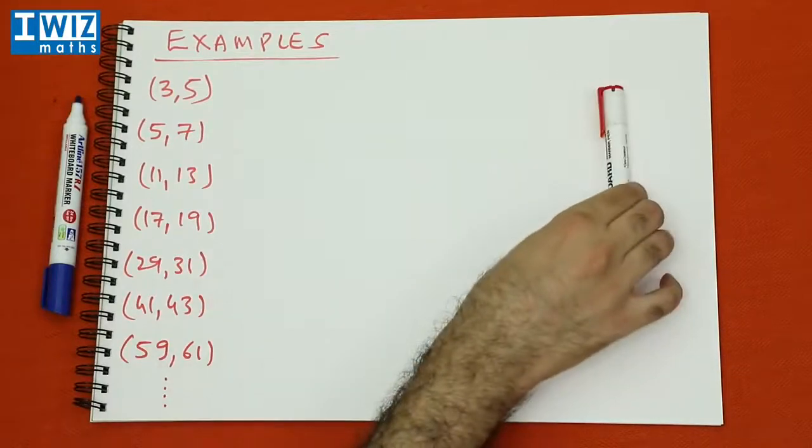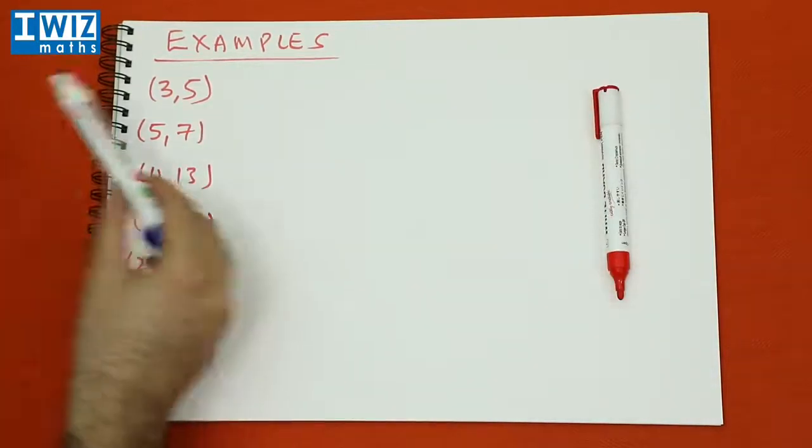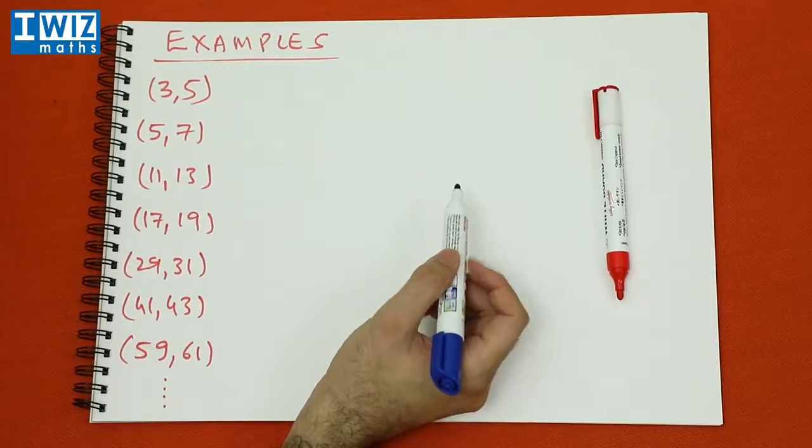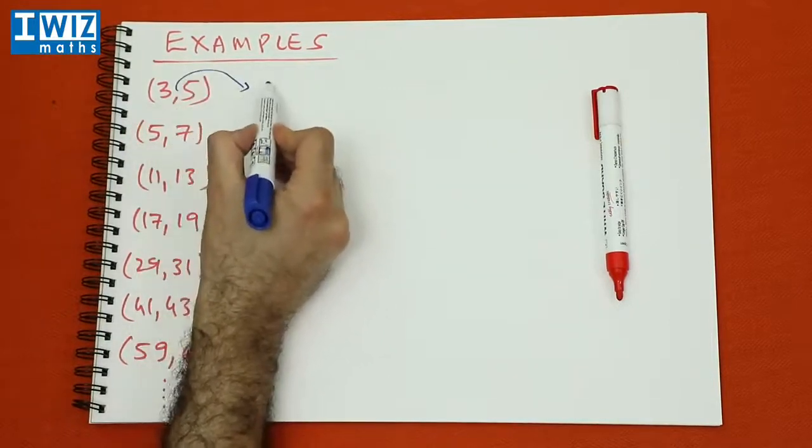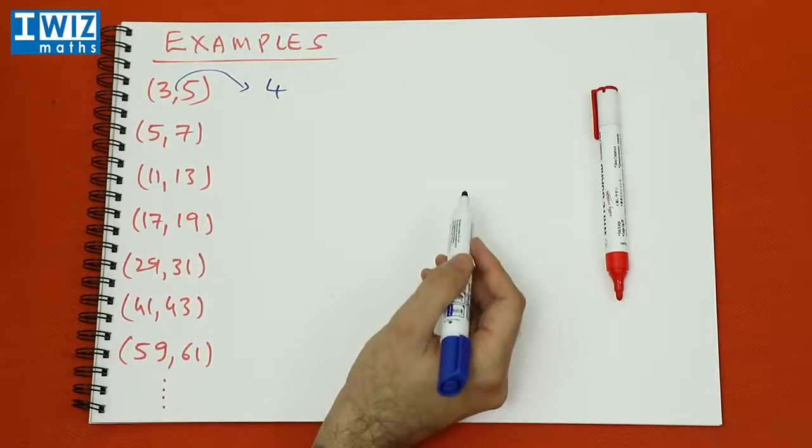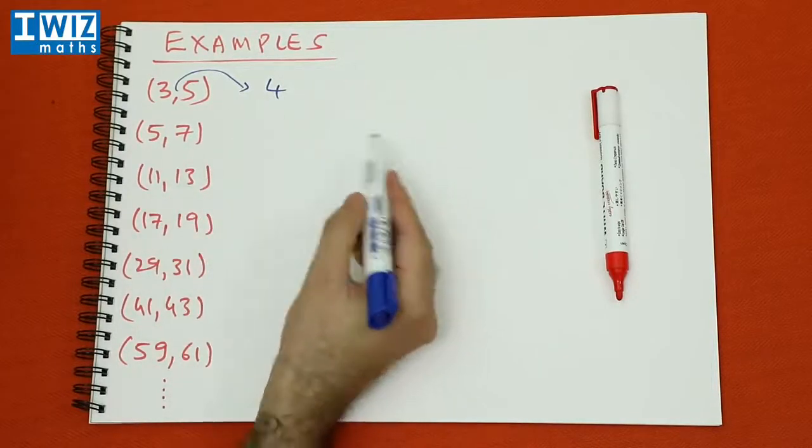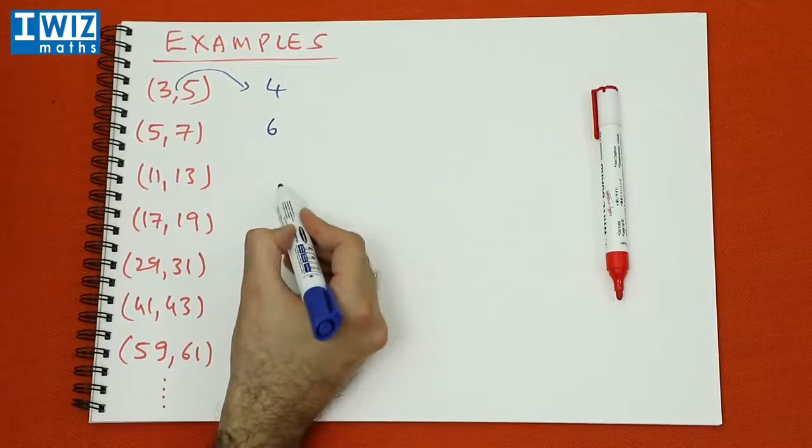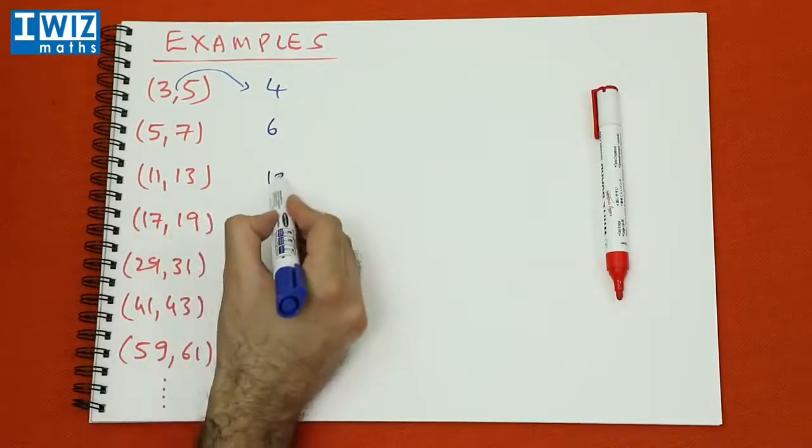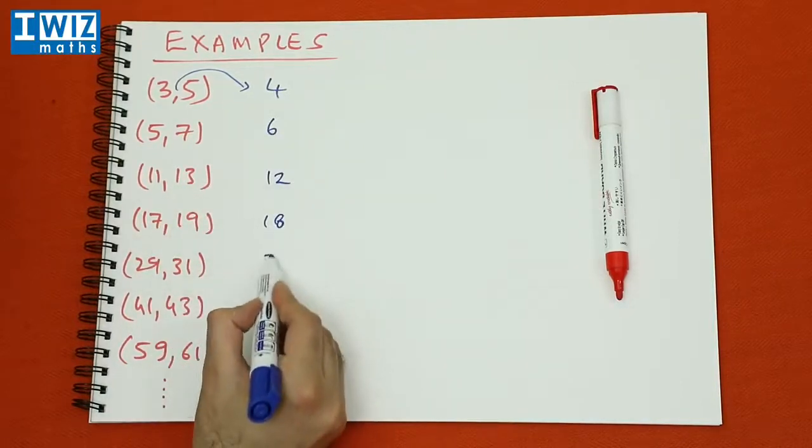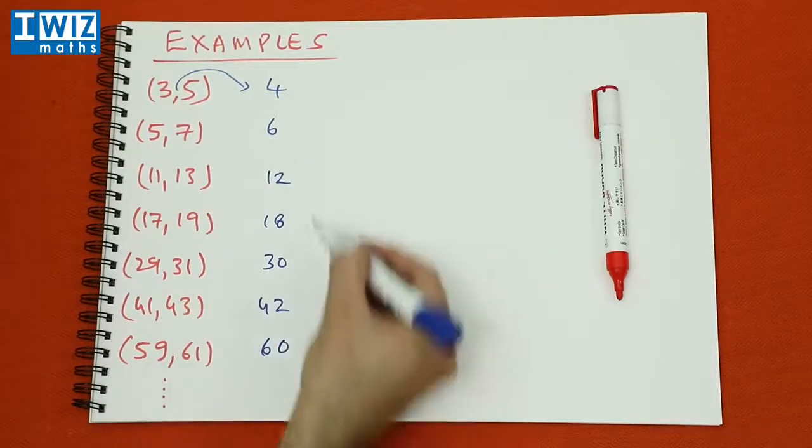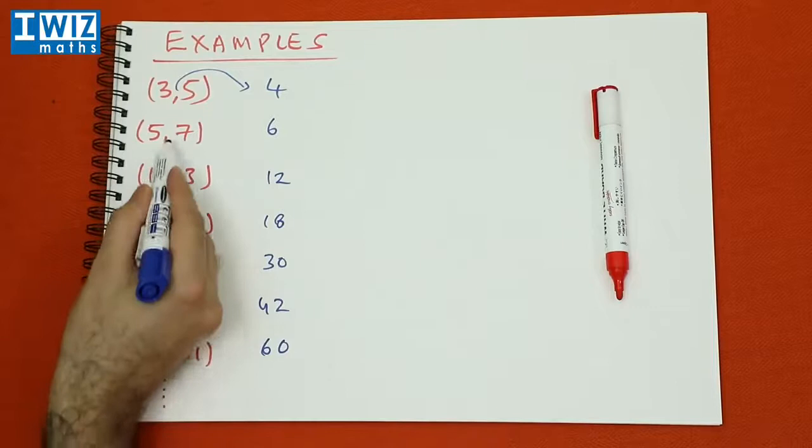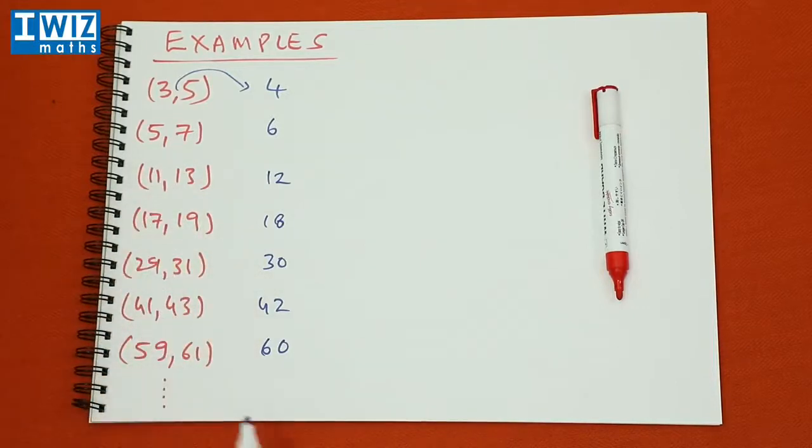So let's look at some properties of these twin primes. Let's look at the number that falls in the middle. So the number that falls in the middle is 4. The number in the middle of these two twin primes is 6. The number in the middle of these two is 12, 18, 30, 42, 60. So these are the numbers that are in the middle of the twin primes.